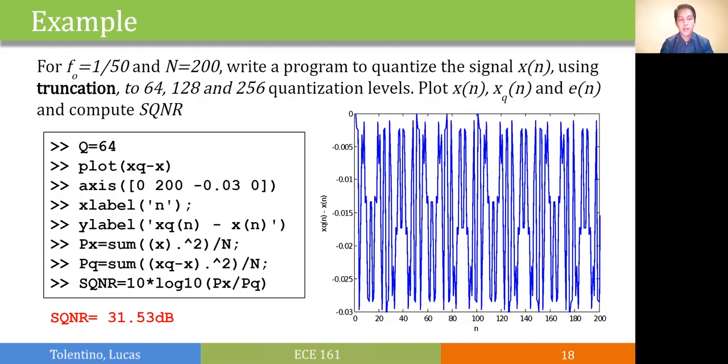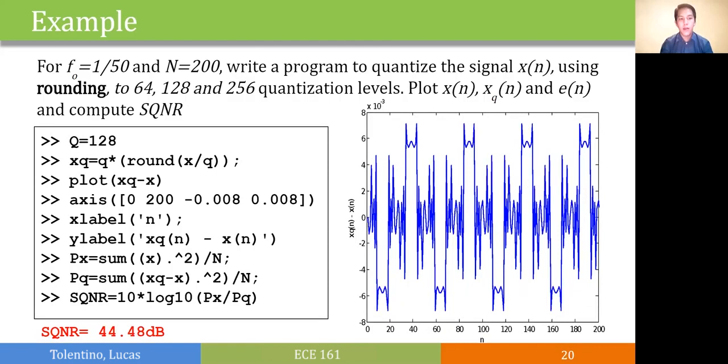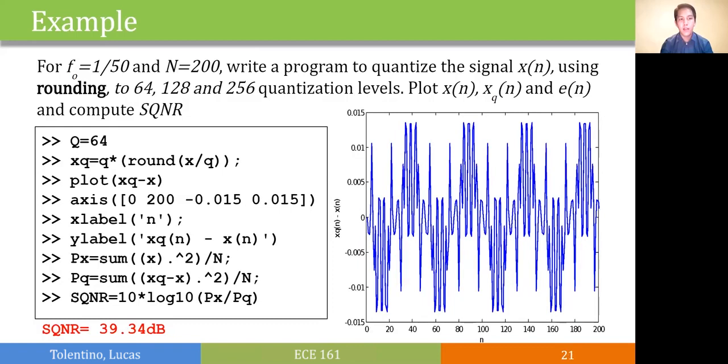Comparing that to rounding, we can see that rounding achieves a higher SQNR. So at 256 quantization levels we have 51 decibels. Comparing that to 128, we lost another 6 decibels at 44.48 decibels. And then at 64 we lose almost again 12 decibels, so the SQNR for this is 39.34 decibels.